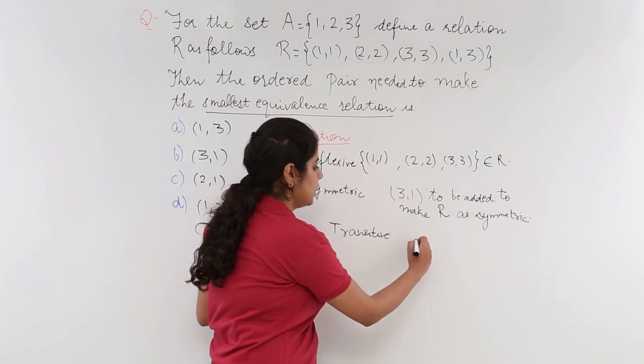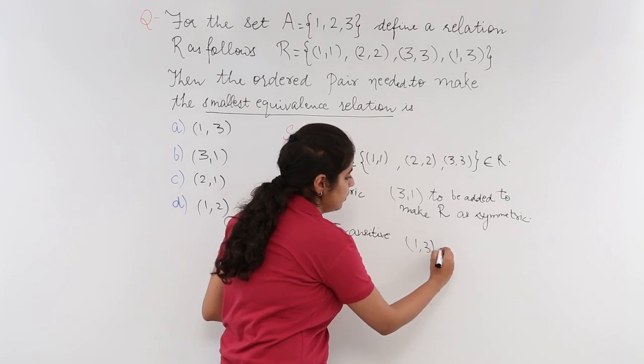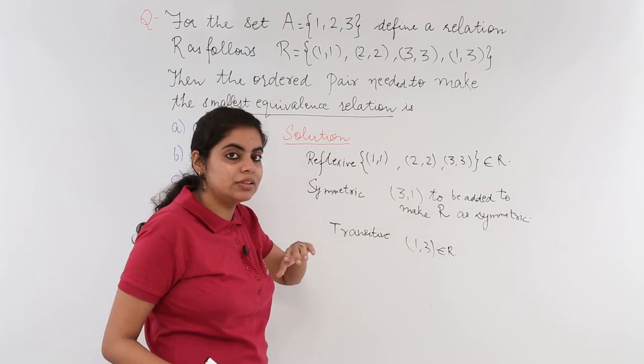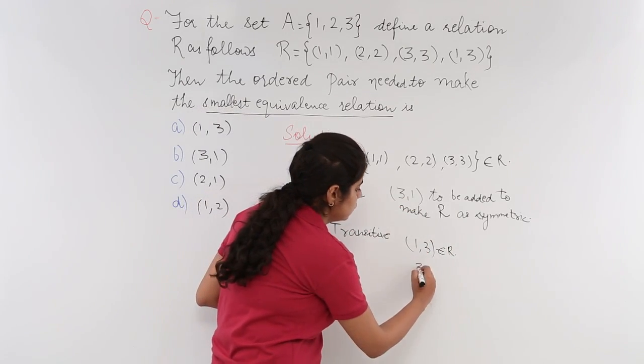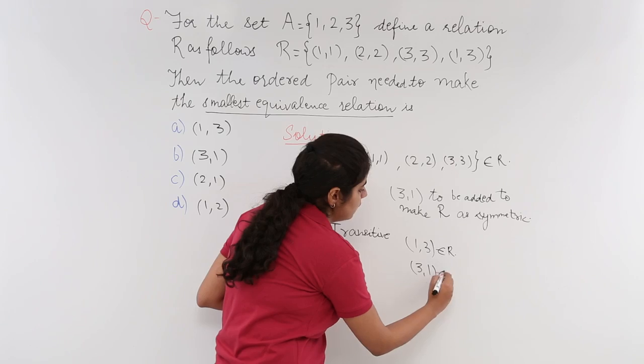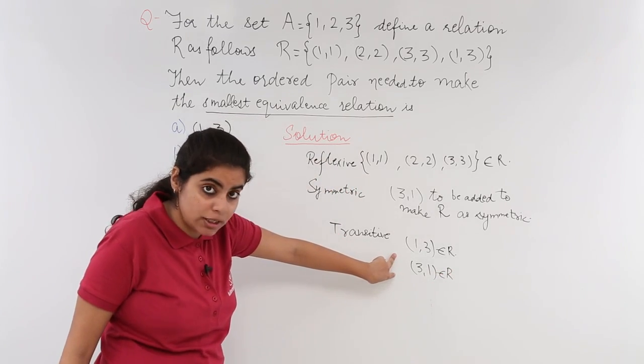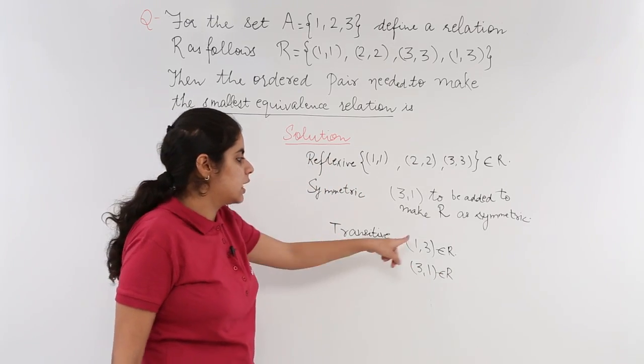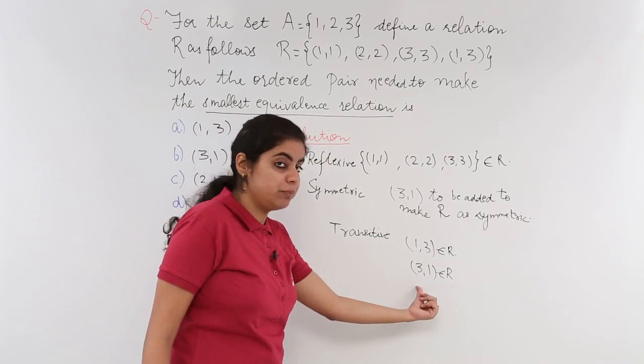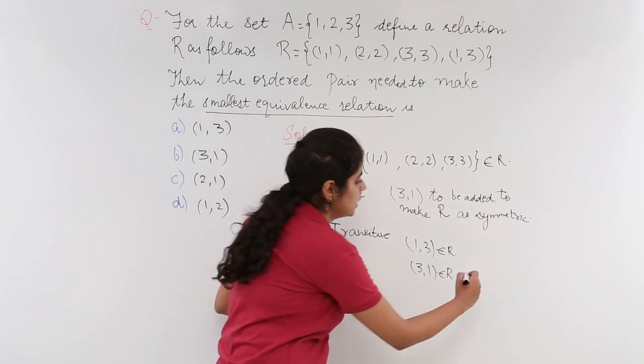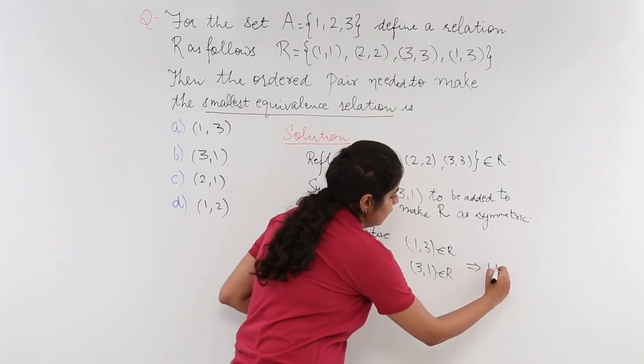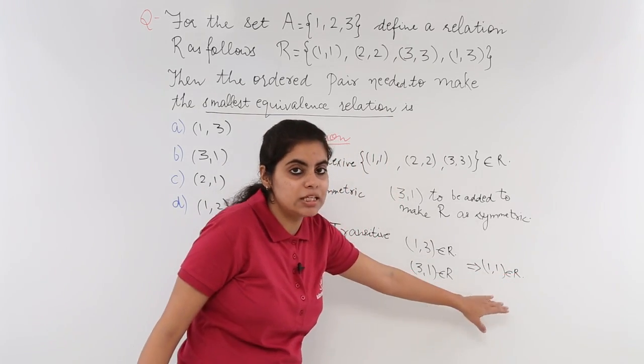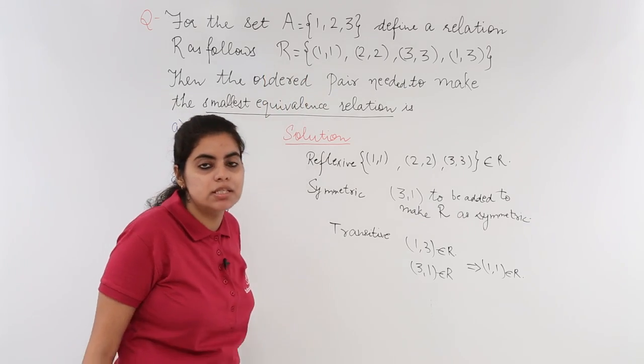1 related to 3, okay? When (1,3) is present, that means if (1,3) belongs to R and I have already added (3,1), that means (3,1) also belongs to R. Can these two not imply that (1,1) should also belong to R? Because A related to B, B related to C, that means A should be related to C. It says that (1,1) should be related to R. Now (1,1), is it present in the question relation? Yes, it is already present.